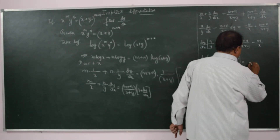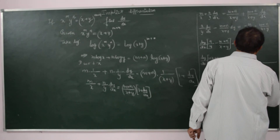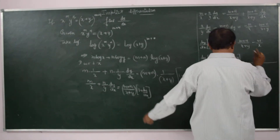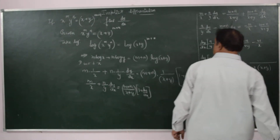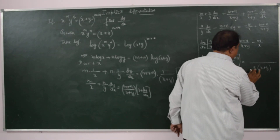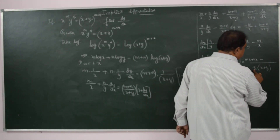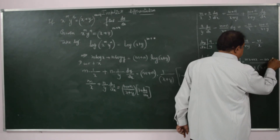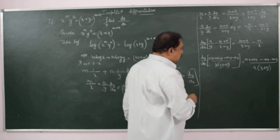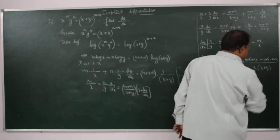Now on the right-hand side: x into m plus n by x plus y — x plus y cancels. Multiplying by x: nx plus mx minus. x and x cancel, so we write nx minus. Then ny minus ny cancel, and mx minus mx also cancel, leaving terms that simplify further.